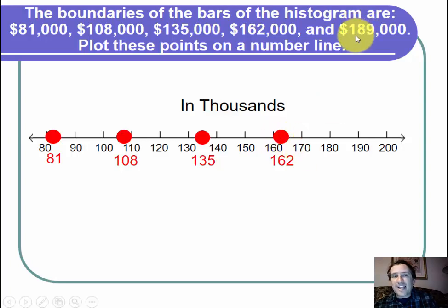And then finally, the last number to plot is 189,000. That's just before 190 in thousands. So I plot that point.